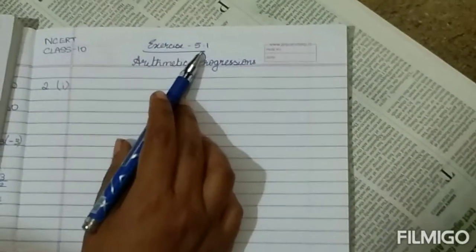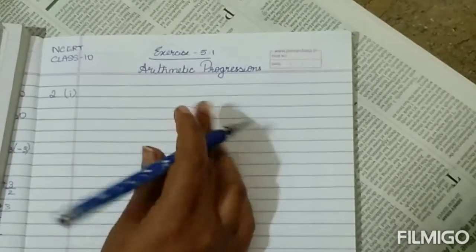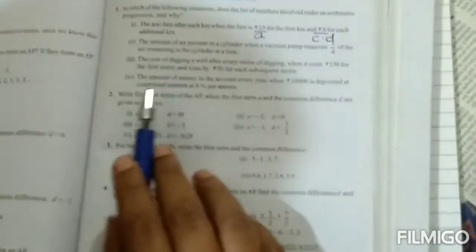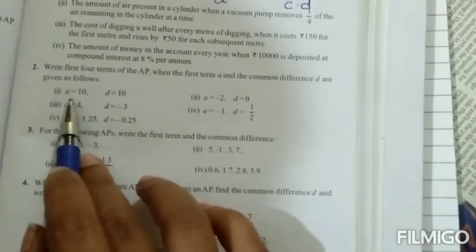Arithmetic progression exercise 5.1, NCERT textbook class 10. Now the second problem: write the first four terms of AP. You are going to form an AP, and you have to find out the first four terms using the first term and common difference they have given you.